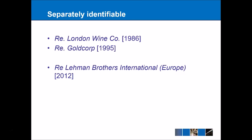Similarly, in Re Goldcorp, a gold exchange company went bankrupt with a vault full of gold, but it was not clear which pieces of gold belonged to which customer. However, one customer — a bank — had a separate account and a separate vault where their gold was actually separately identifiable. So that bank's trust succeeded, whereas all of the other customers' trusts failed.